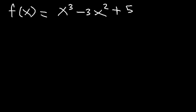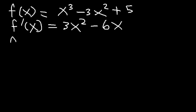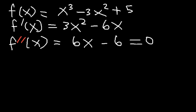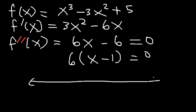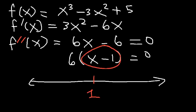To find when the function is concave up and concave down, we need the second derivative. The first derivative is 3x² - 6x. The derivative of 3x² is 6x and the derivative of 6x is 6, so the second derivative is 6x - 6. Set it equal to zero and factor out 6: the potential inflection point is x = 1, where the second derivative equals zero.